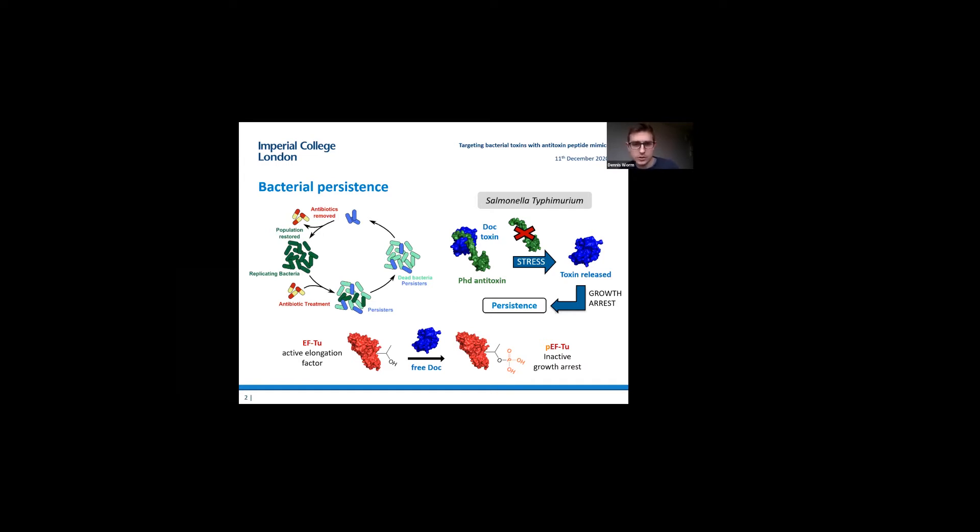The activity of the Doc toxin is a kinase activity. It phosphorylates the EF-Tu elongation factor. This phosphorylated translation elongation factor is inactive, so there's no protein translation anymore and the cells enter growth arrest.